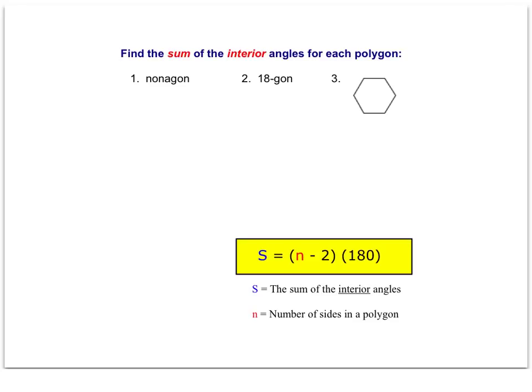This video is on Sum of Interior Angles, and we're asked to find the sum of the interior angles for each polygon. Make sure you're understanding exactly what they're asking — the sum and the interior — as we're going to be learning some different formulas going forward. We're going to find n for each of these and plug it into (n minus 2) times 180.